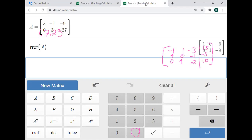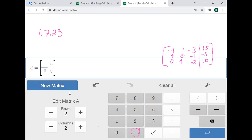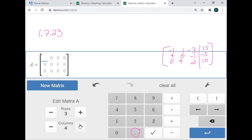So you're going to create a new matrix. We're going to make sure it has three rows and four columns in the bottom left. We're going to start typing them in: negative one, one, negative three, 15 in the first row.